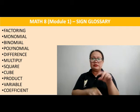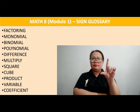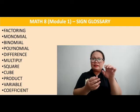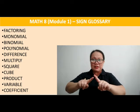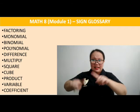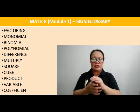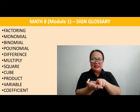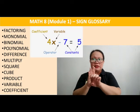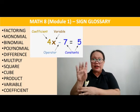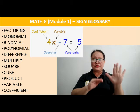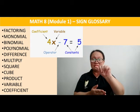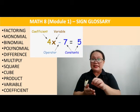Next word: VARIABLE. We will invent a sign for this because I haven't seen any sign of this in the dictionary. So we will have it like this — variable, or the letter. For example, in the picture: 4x minus 7 equals 5. The variable is the x.